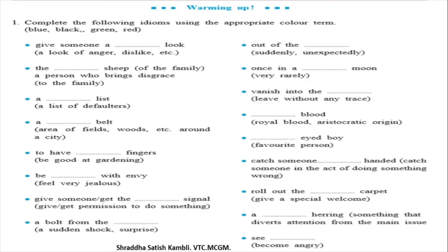There are a number of idioms in English based on colors. The first is 'give someone a black look' — when you look angrily at someone with dislike or distrust. The next is 'the black sheep of the family' — a person who brings disgrace or bad name to the family, someone who has got involved in some kind of crime or wrongdoing.